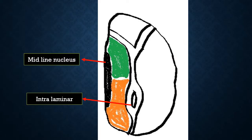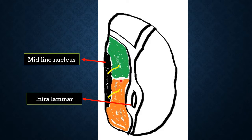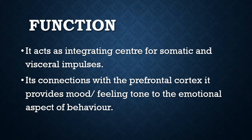Coming to the midline nucleus: the dorsomedial group also connects with the midline nucleus and the intralaminar nucleus. The intralaminar nucleus is present within the intramedullary laminae. One connection links to the intralaminar nucleus, another connects with the magnocellular part of the dorsomedial group, and another connects with some of the lateral thalamic nuclei. The dorsomedial group connects with the prefrontal cortex and provides mood or feeling tone to emotional behavior.